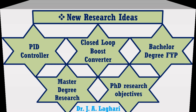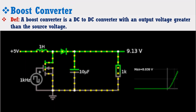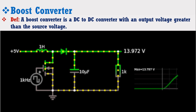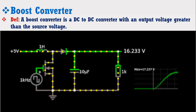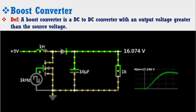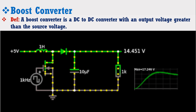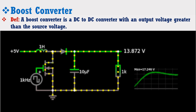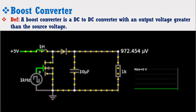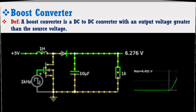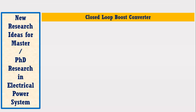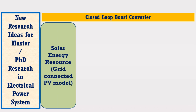We know that a boost converter is a DC to DC converter with an output voltage greater than the source voltage or input voltage, as shown here in this animated figure. This boost converter is widely used in power electronics applications as well as in solar energy resources such as grid-connected PV model to increase the DC voltage.